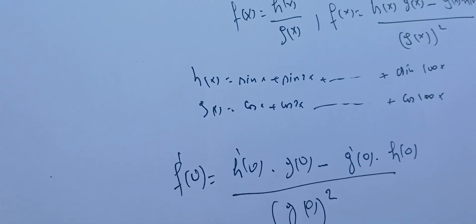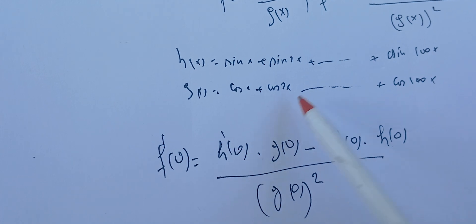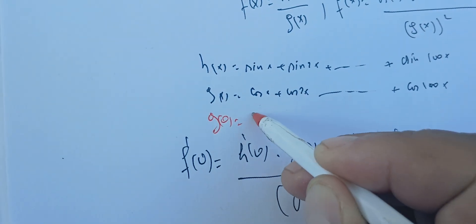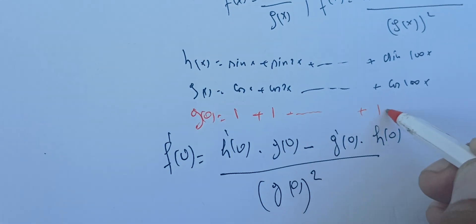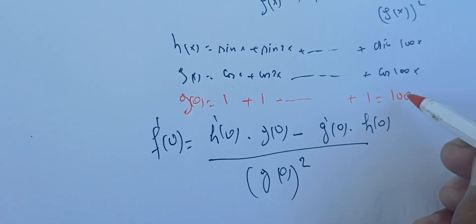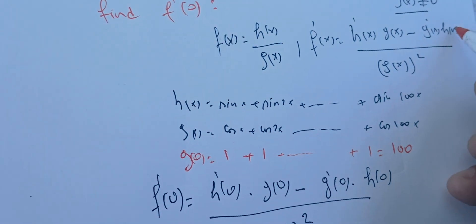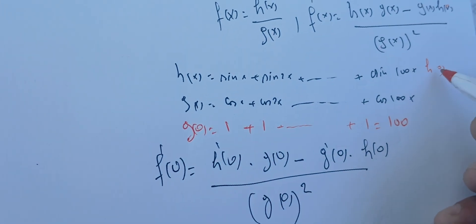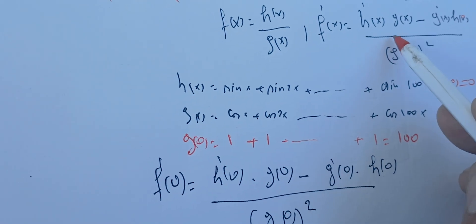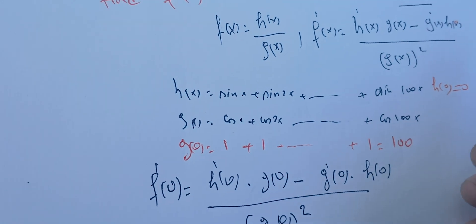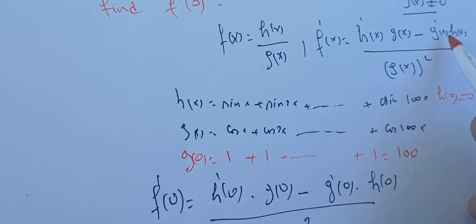One key simplification: G(0) equals cosine 0 plus cosine 0 plus ... plus cosine 0, which is 1 plus 1 plus 1 — 100 times — so G(0) = 100. And H(0) equals sine 0 plus sine 0 plus ... plus sine 0, which is just 0.